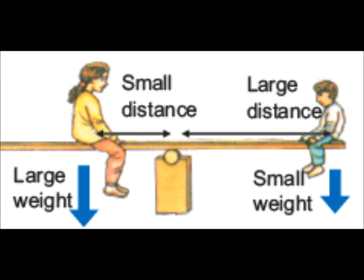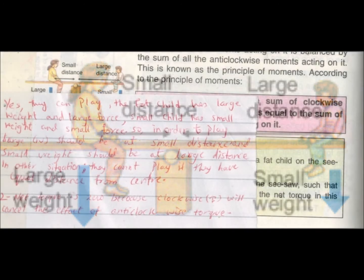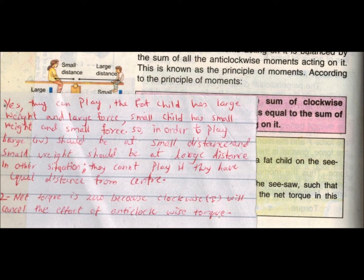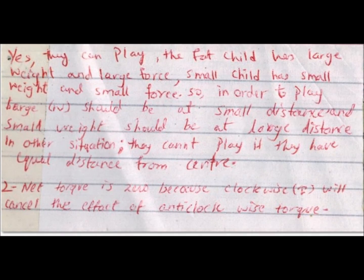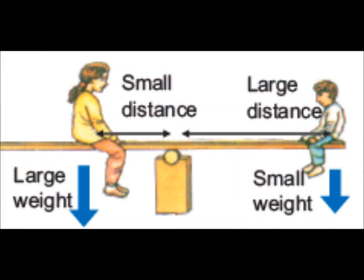The answer is yes, they can play together. The fat child has large weight and large force, while the small child has small weight and small force. In order for them to play, the large weight should be at a small distance from the center and the small weight should be at a larger distance from the center.